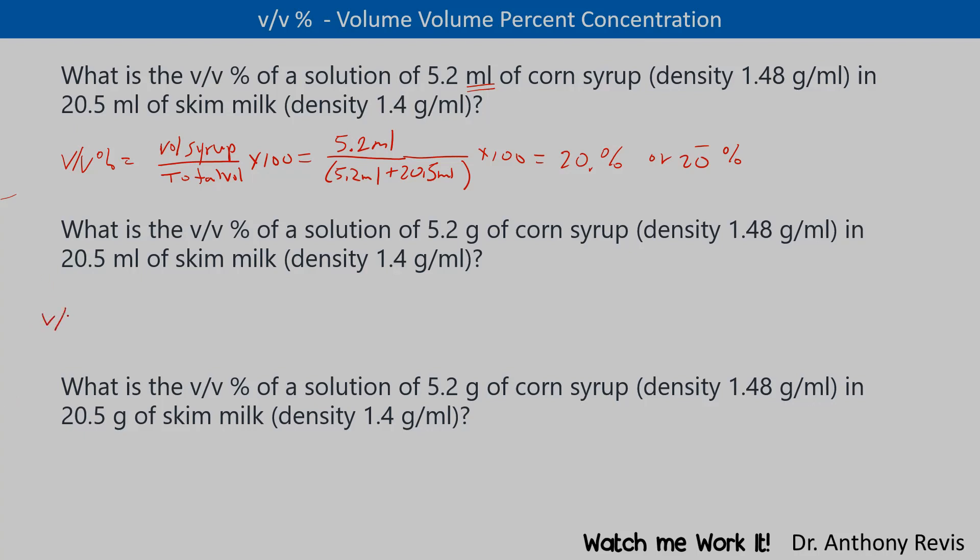So to do a volume-volume, we set it up as any other percent. This would be the percent of the volume of the syrup over the total volume. And so in this case, we don't know the volume of the corn syrup, so we're going to convert it and find out what it is. This would be times a hundred here, by the way.